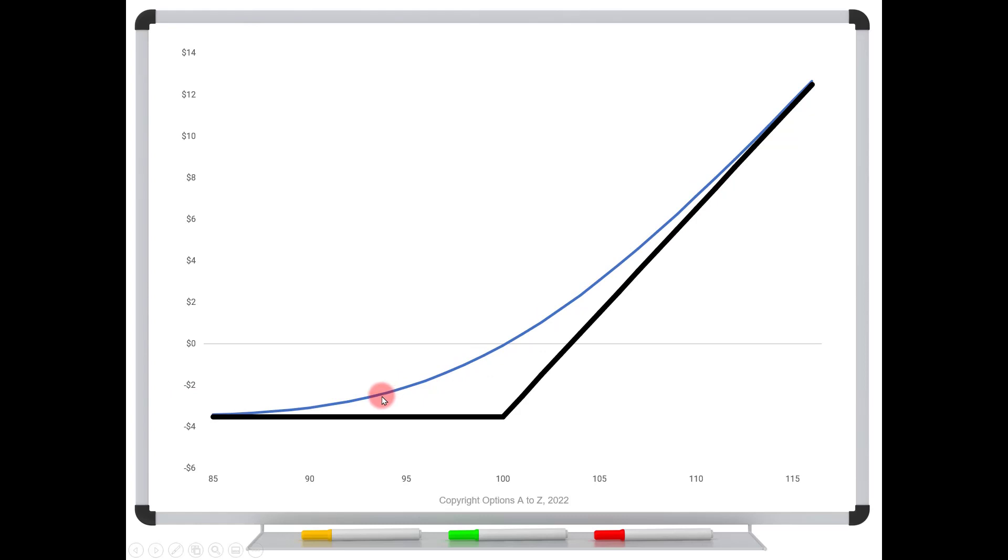This is the current risk graph. How do you read it? Same idea.